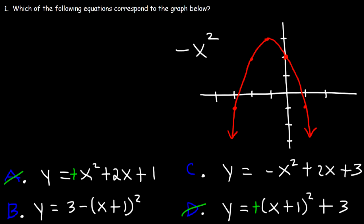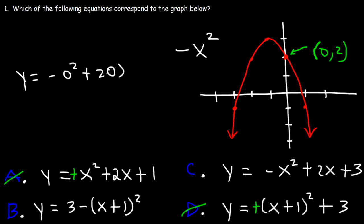So we're between C and B. We can use the y-intercept to distinguish them. Notice the y-intercept is 2 — the point (0, 2). When x is 0, y should equal 2. For C, plugging in 0 gives: negative 0 squared plus 2 times 0 plus 3, which equals 3, not 2. So we can eliminate C.